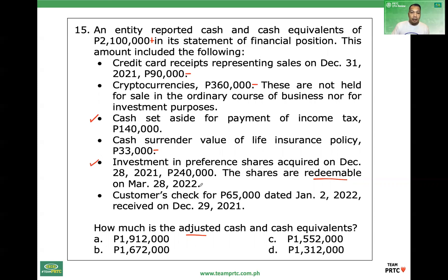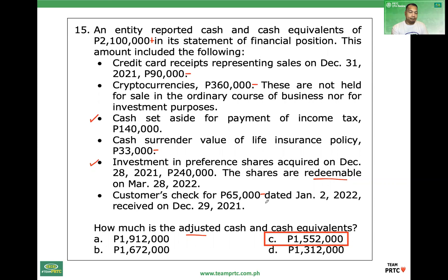Customer's check — 65,000 — post-dated. A post-dated check received is not yet collected, so it's still part of receivables. Erroneously included. Minus. So the adjusted cash and cash equivalents equals the reported amount minus the credit card receipts, minus the cryptocurrencies, minus the cash surrender value of life insurance, and minus the customer's post-dated check.